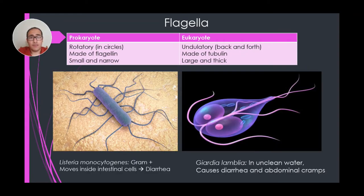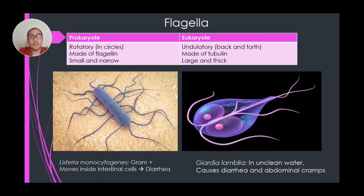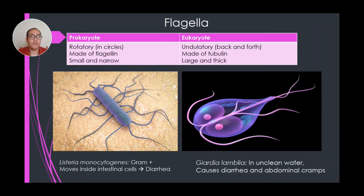Here's a picture of Listeria monocytogenes, a type of gram-positive bacteria. You can see the extensions around the outside of the bacteria — those are the flagella that allow the cell to move in circular motions. This type of cell infects intestinal cells causing diarrhea. Another eukaryotic cell that can cause diarrhea is Giardia lamblia, a protist that lives in ponds and unclean waters, infecting the gastrointestinal system and causing diarrhea and cramps.